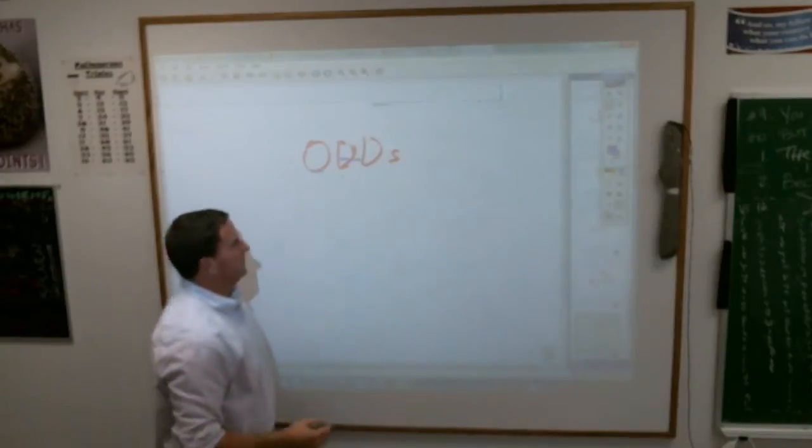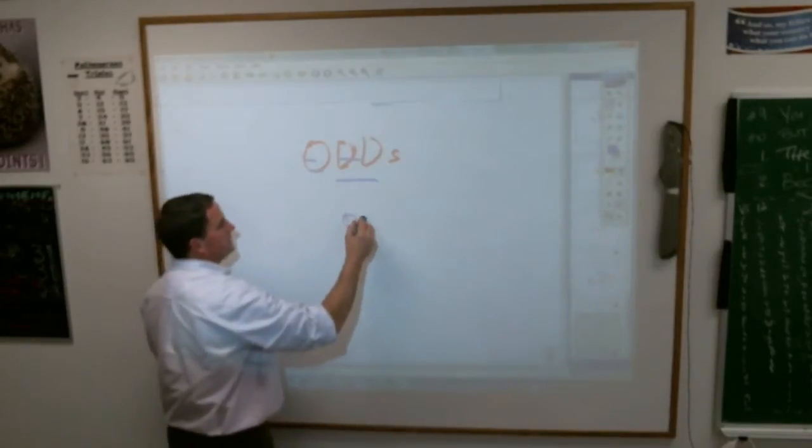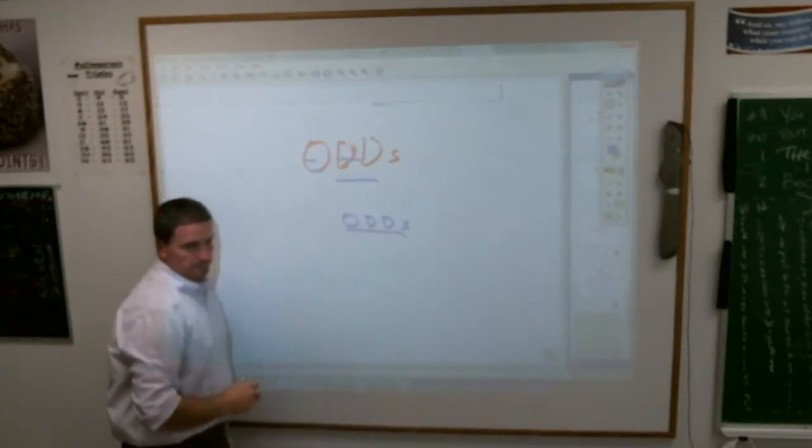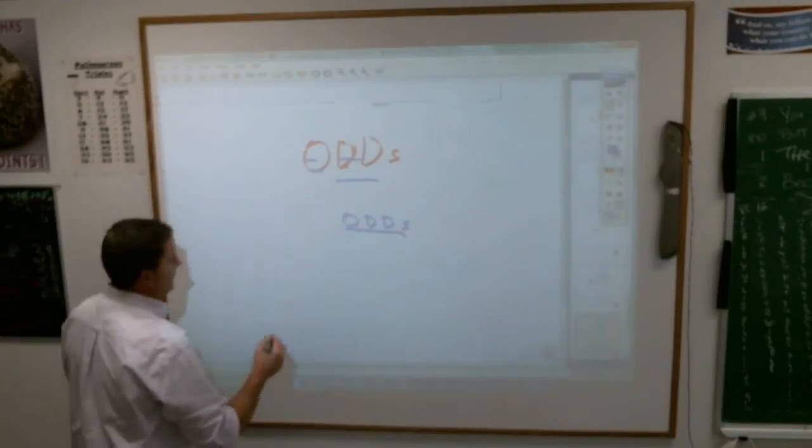How is odds different than probability? How is odds different from probability different from chance? You wouldn't know. So I'll just write it down.